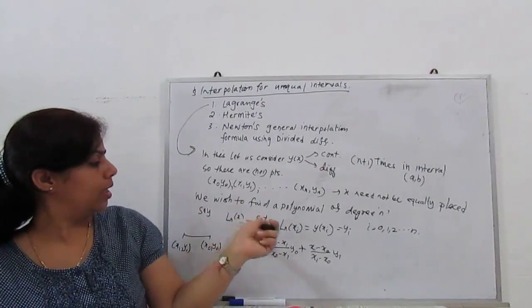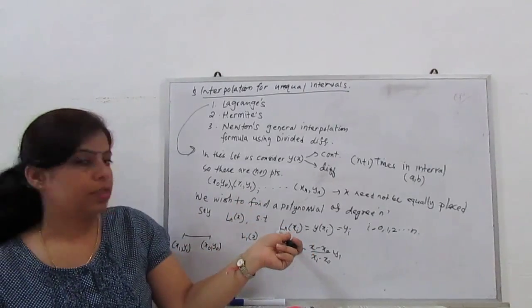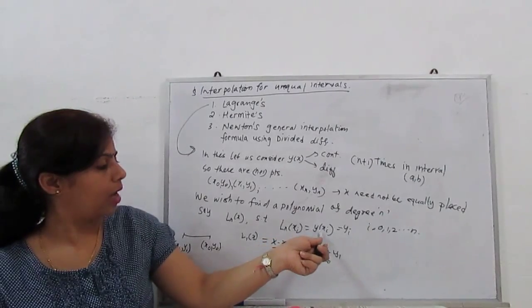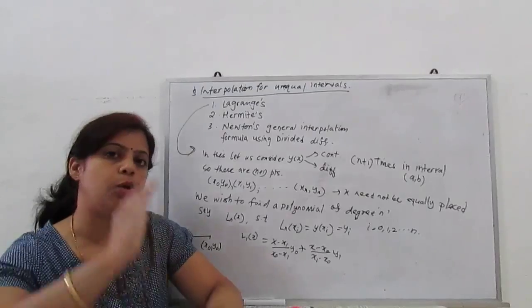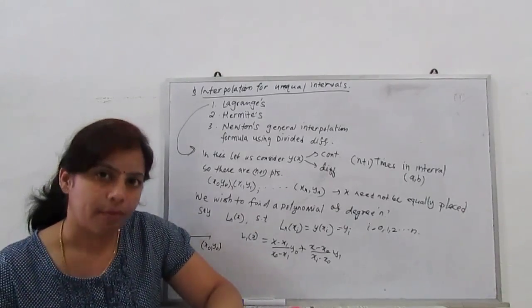First for degree n, our Ln, L is the Lagrange's coefficient, Ln(xi) is y(xi) or yi, where i goes from 0 to n. We start from the basic.